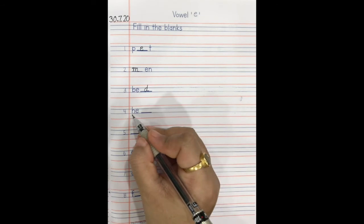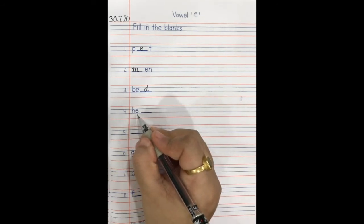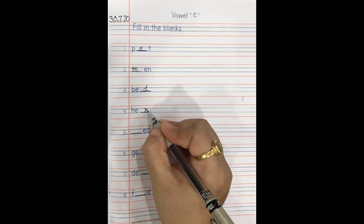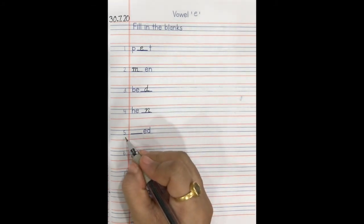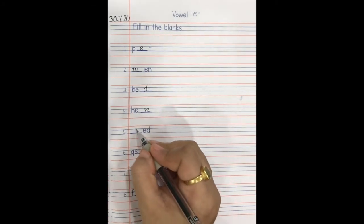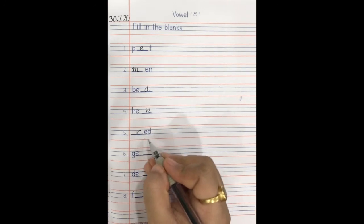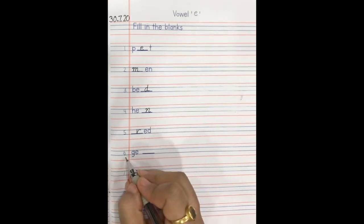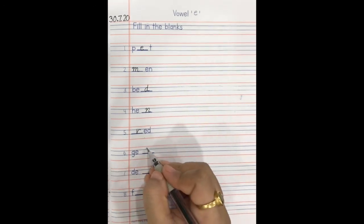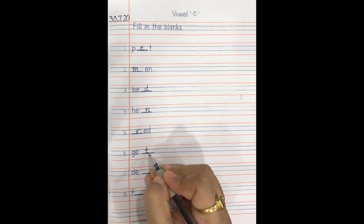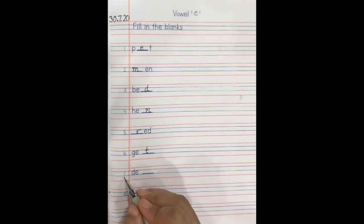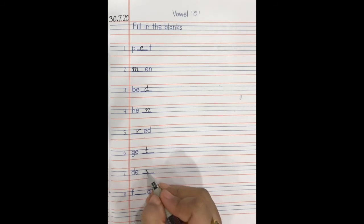Number 4: kh_n — the answer is 'hen'. Number 5: r_d — the answer is 'red'. Number 6: g_t — the answer is 'get'. Number 7: d_n — the answer is 'den'.